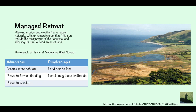Managed retreat is basically allowing erosion and weathering to happen naturally without intervention — essentially not doing anything — and can include the realignment of the coastline and the deliberate flooding of areas of land. A good example is Medmerry near West Sussex. Advantages: creates more habitats, prevents further flooding, and lets you choose where erosion occurs in lower-value areas like farmland, making it a cheap option. Disadvantages: land is obviously lost and people may lose their livelihoods, their land, and their homes.